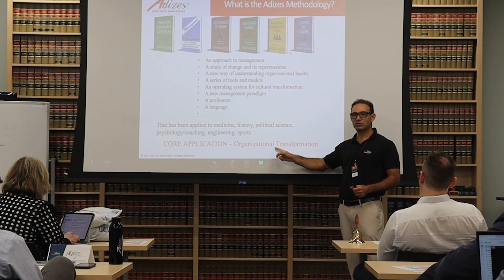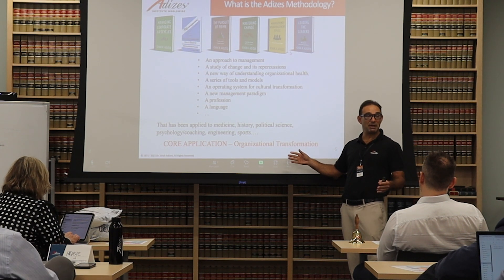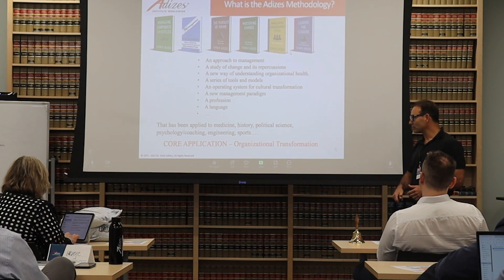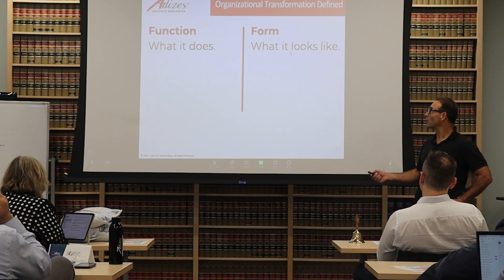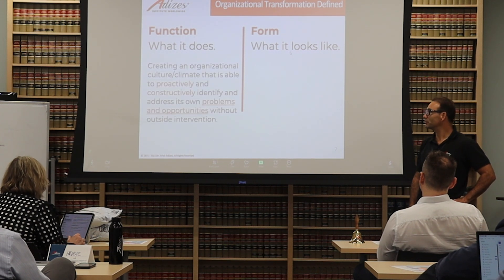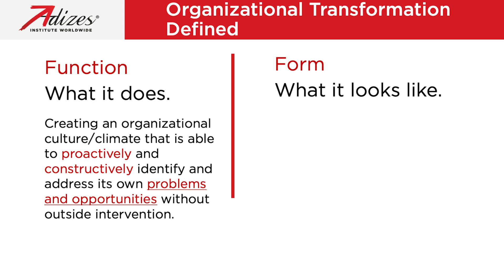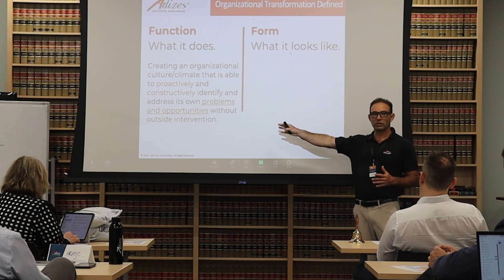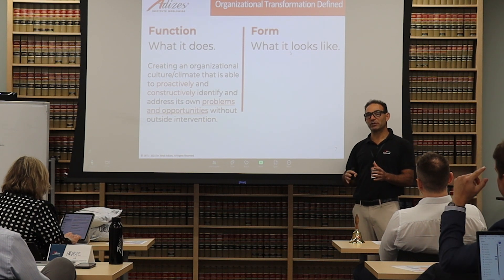The core application is organizational transformations — that's what's paying the bills and what we've been focused on the most. So let's talk about what organizational transformation is. It has two things: the function, which is what it does, and what it looks like. The first definition: what does organizational transformation do? It is a process for creating an organizational culture and climate that is able to proactively and constructively identify and address problems and opportunities without external intervention. That's the goal — creating an organization that's able to solve its biggest problem, which is its inability to solve its own problems.